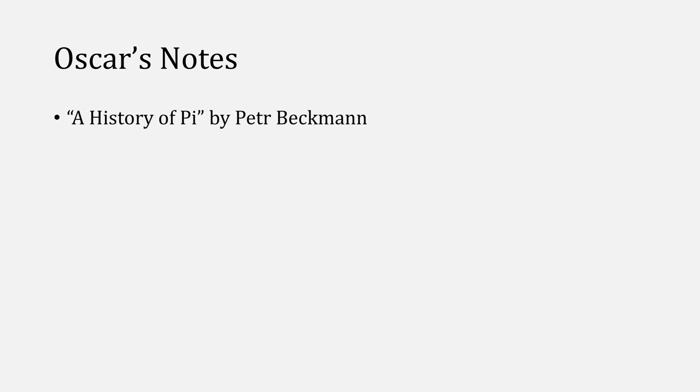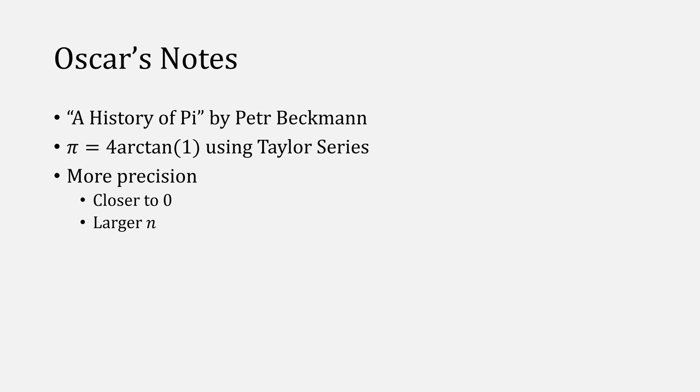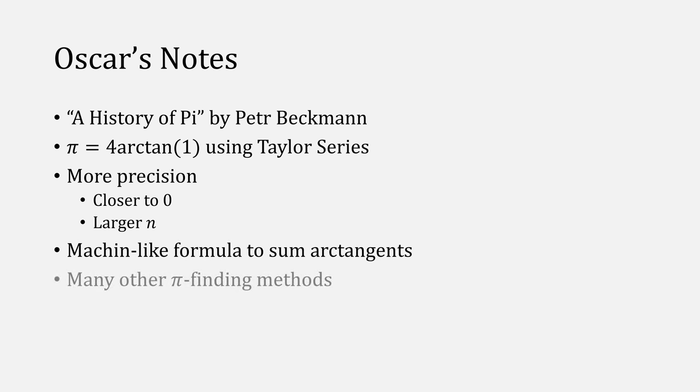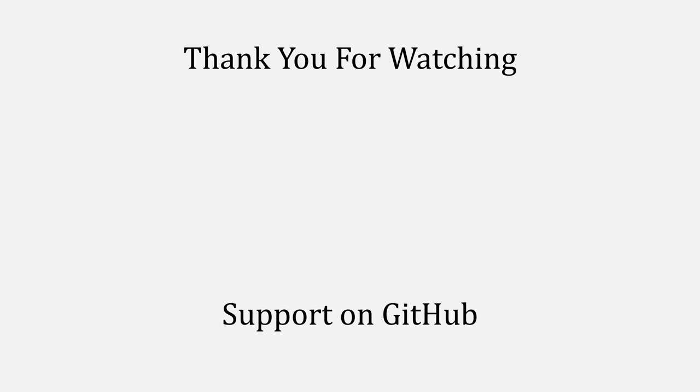Before you click away, I do recommend that you read A History of Pi by Peter Beckman, and recall that Pi can be computed using 4 times the arctangent of 1 with Taylor series. That you'll have better precision when you get closer to 0, and when you have a larger value for n. The Machin-like formula is also used to sum those arctangents. And there are many other Pi-finding methods out there. This is just one of the more commonly used ones, and it works quite well. The example code that I used will be hosted on GitHub. Thank you for watching this special Pi Day themed video. I don't think I'm going to make this an annual thing, but if there are other Pi-finding methods that you would like for me to cover, definitely let me know. And again, thank you for watching.